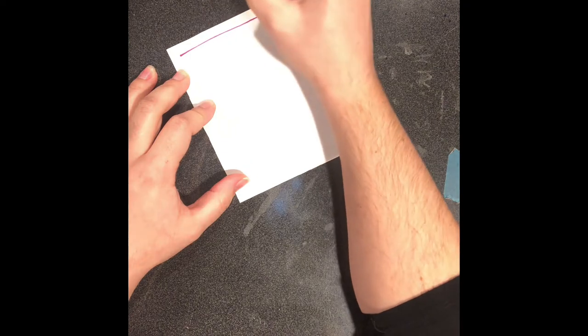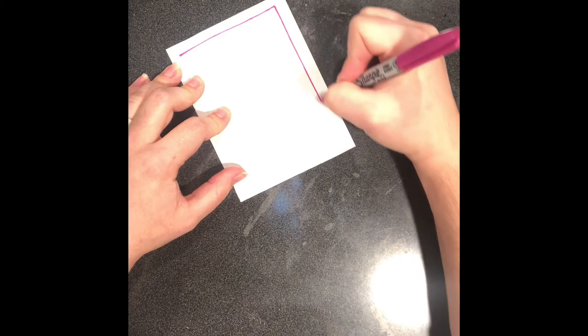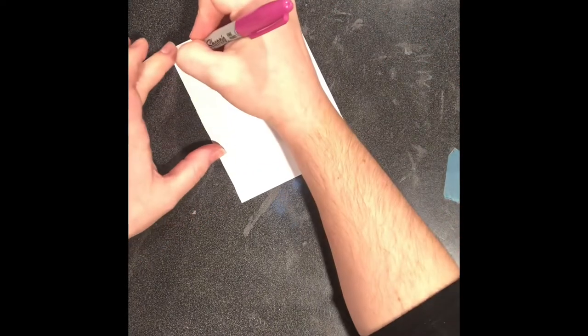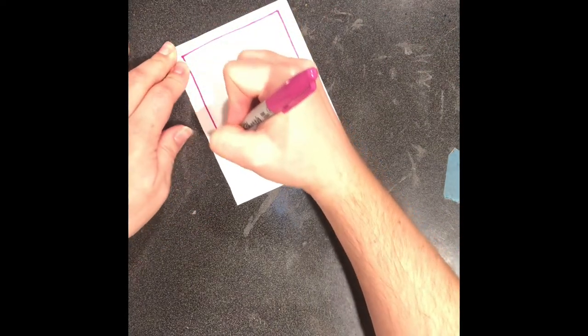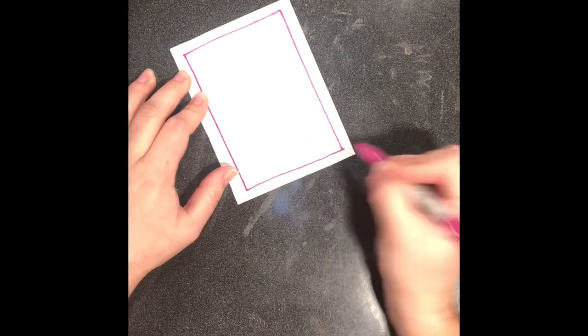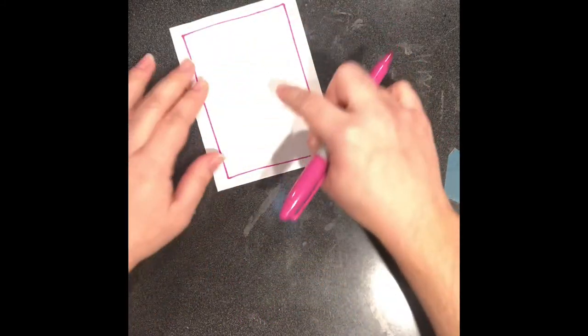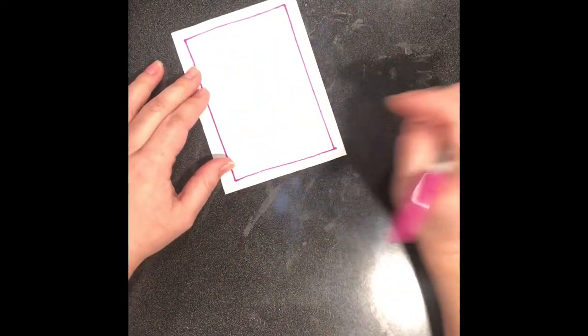I'm going to draw a line across the top but I'm not going to go all the way to the edges. Basically I'm creating a rectangle inside of my rectangle piece of paper, also known as a border. So this outside part is going to be the frame and I'm going to draw on the inside here the artwork.